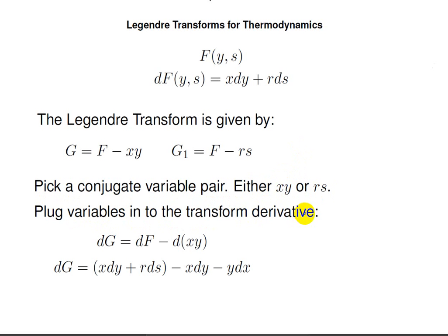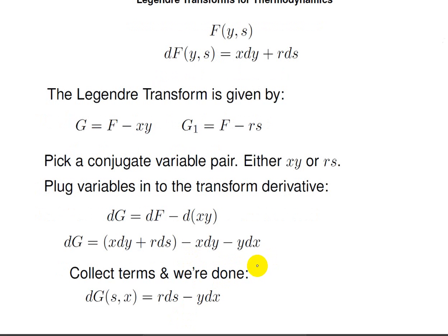You plug the variables into the derivative of the transform. The transform is g equals f minus xy, so the derivative of the transform is dg equals df minus the derivative of xy. So then I do the plug-in: dg equals — instead of df I put xdy plus rds — minus xdy minus ydx. Now, the only thing left to do is collect terms: the plus xdy and the minus xdy drop out, leaving us with dg as a function of s and x, equal to rds minus ydx. The reason it's a function of s and x is because that's what can change — we have a ds term and a dx term.